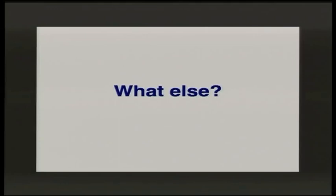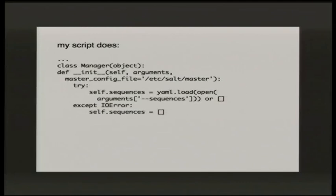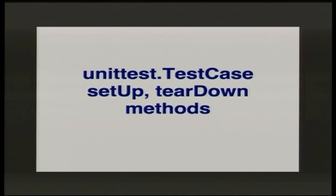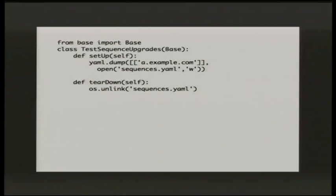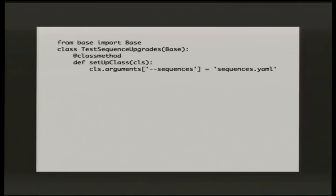My script looks at a configuration file to work out the ordering, so in testing I need to check how the script behaves when I do and don't specify a configuration file. The script does a yaml.load(open(...)) on an argument to find the sequences file. unittest has a way of handling this — the setUp and tearDown methods. In setUp you can create the file, and in tearDown you can remove it. I also learned later you can do this at the class level with setUpClass.